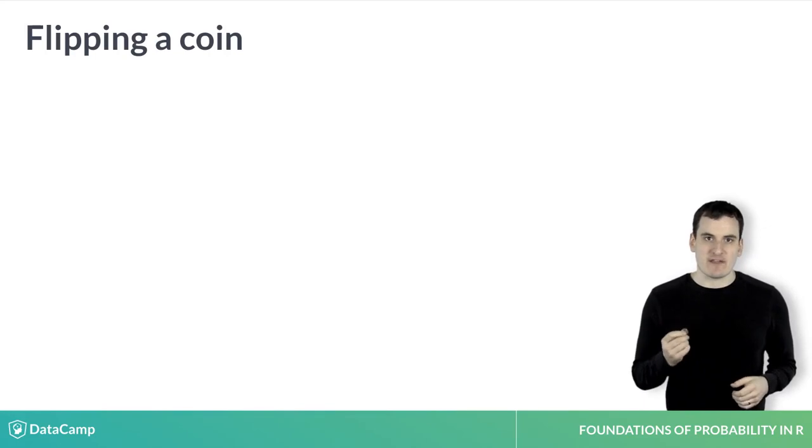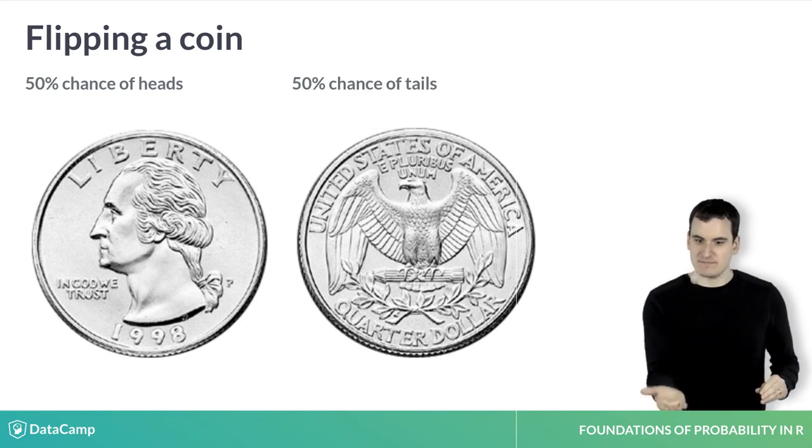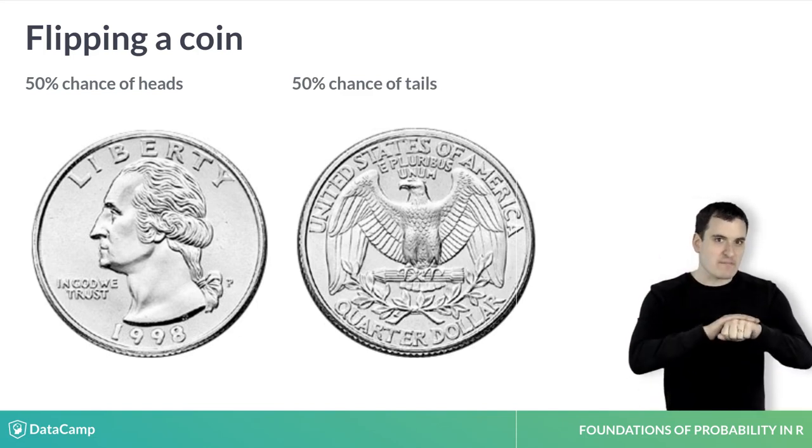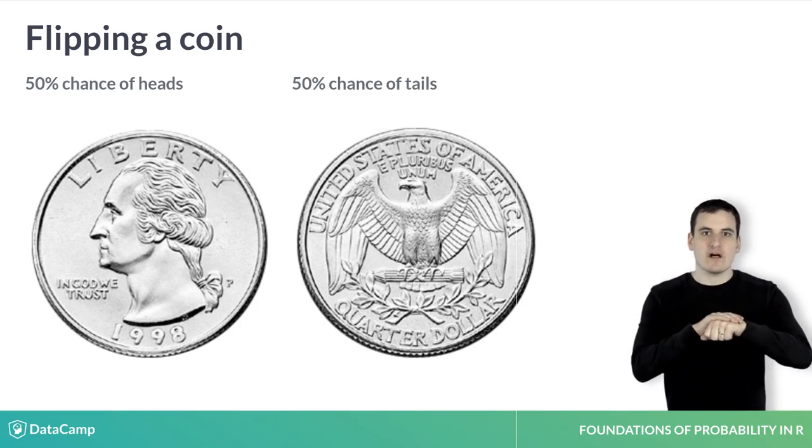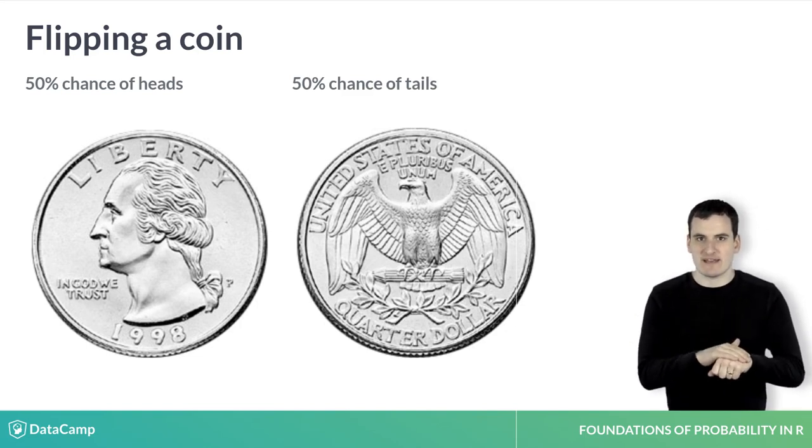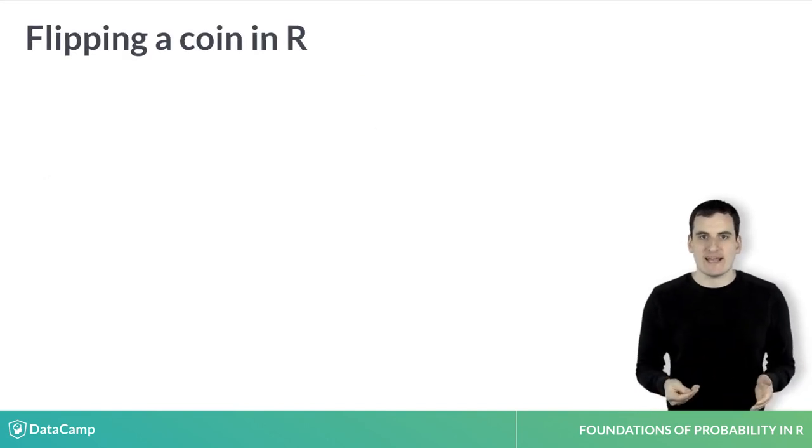Each time I flip a fair coin, it has a 50% chance of being heads and a 50% chance of being tails. Before I look at this coin, it is a random variable. We'll call one case of simulating from this random variable a draw. If you don't have a coin handy, you can use R to simulate this random event.